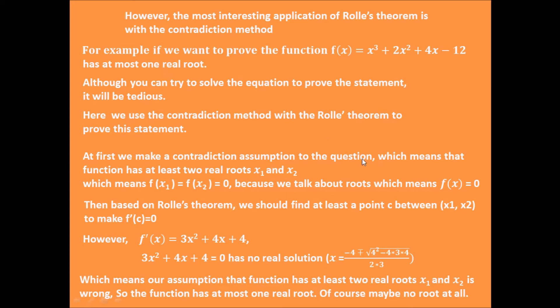So we assume that the function has at least two real roots x₁ and x₂. Which means f(x₁) = f(x₂) = 0. So, based on Rolle's theorem, which means we can find a point within x₁ and x₂ to make its derivative equals 0.